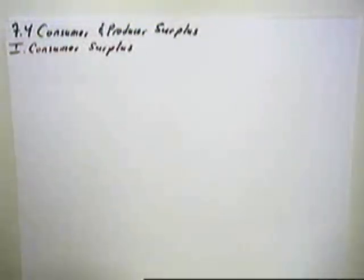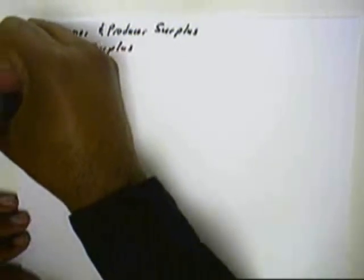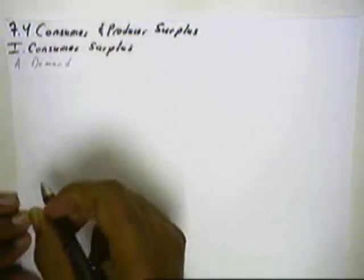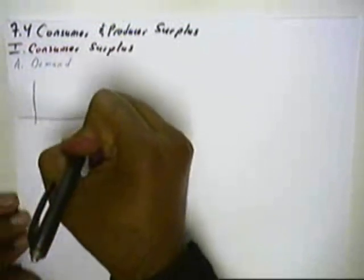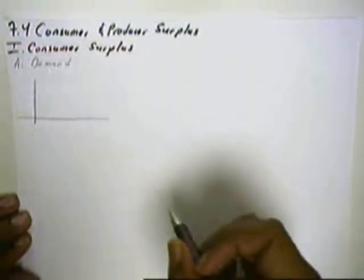7.4 Consumer and Producer Surplus. We'll begin by looking at Consumer Surplus. First, let's consider our demand function. We found a demand function to be basically the consumer side, or how the consumer sees it.